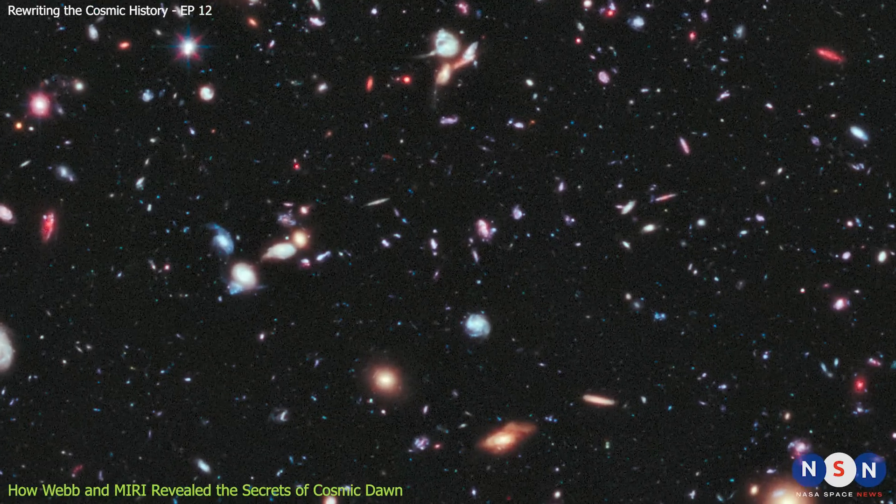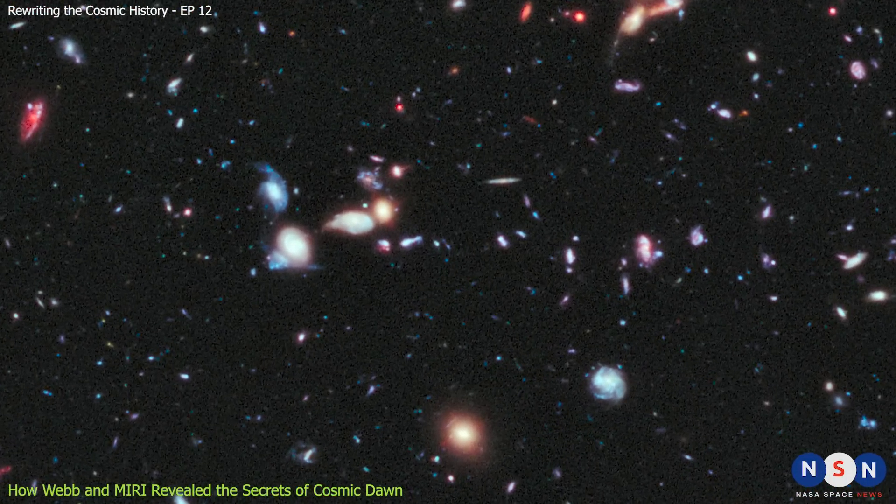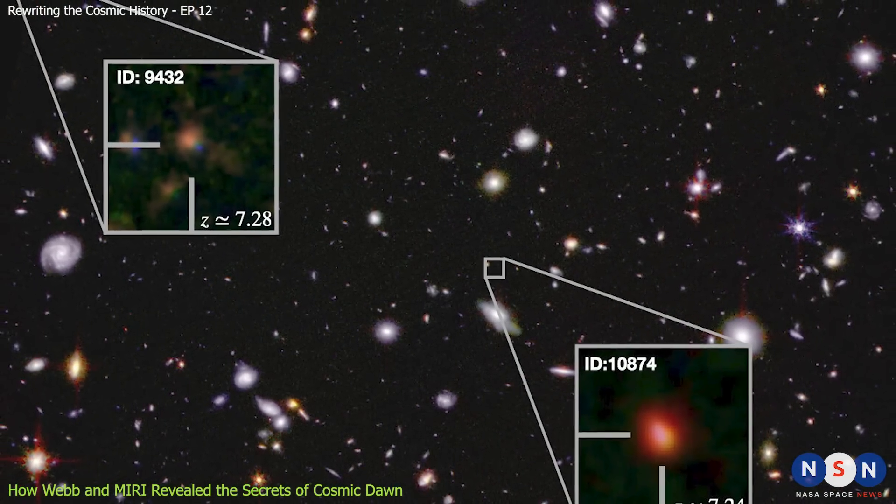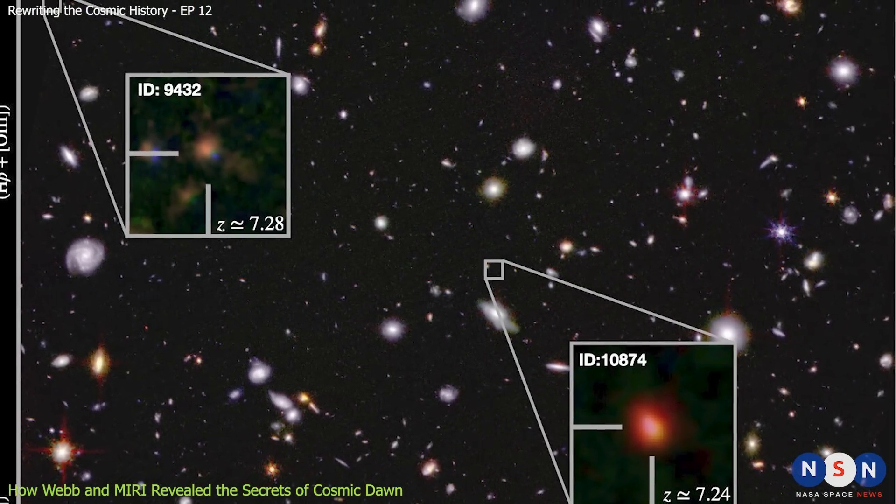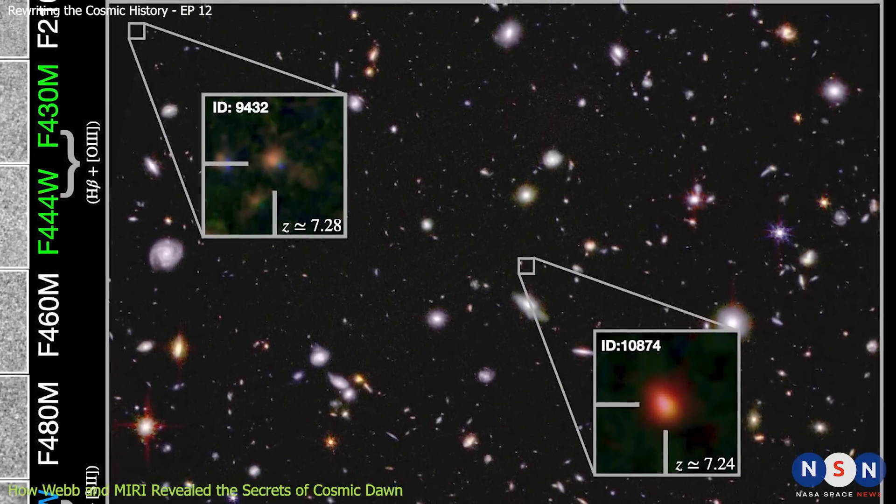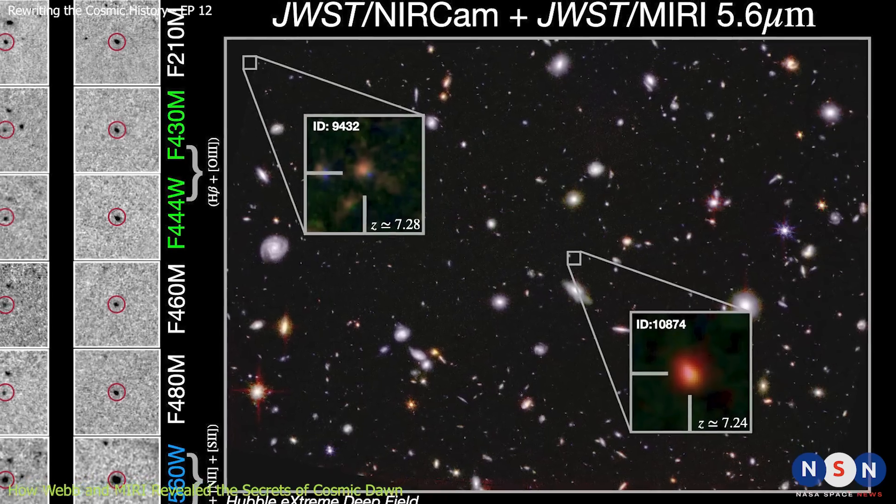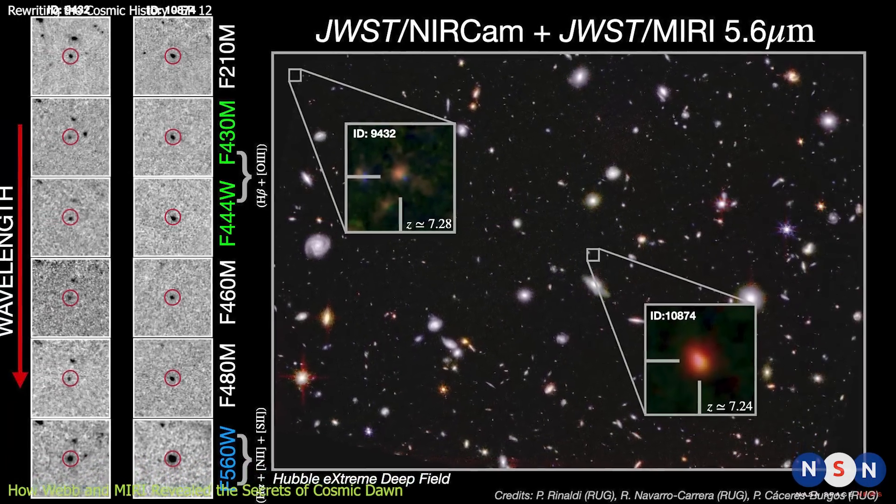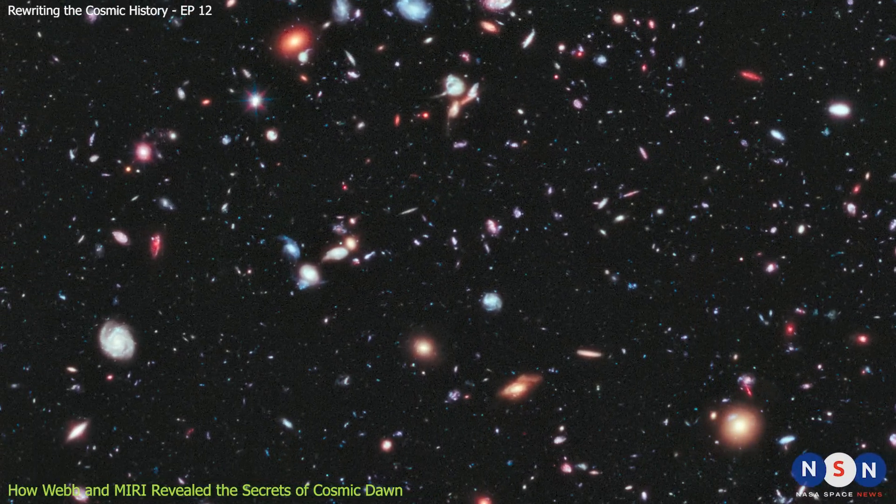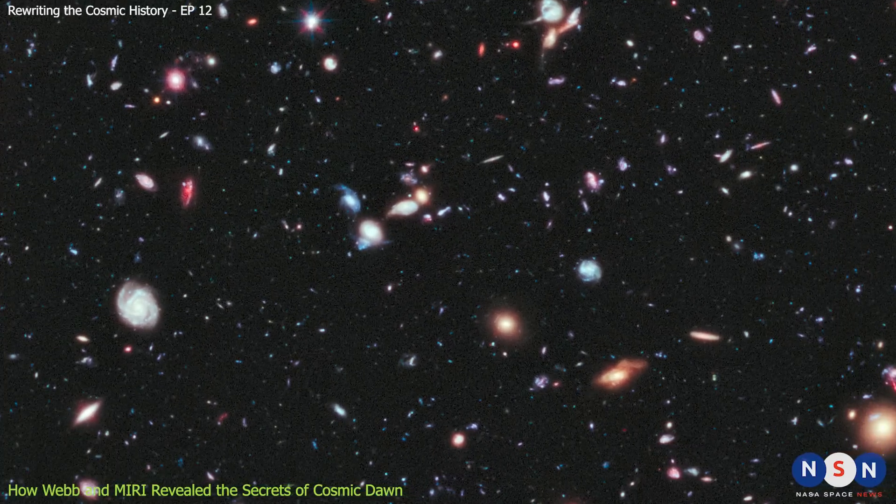MIRI used this mode to observe an even smaller region within the James Webb Extreme Deep Field, and it found something remarkable: star formation in 12 galaxies that are located at redshifts between 6 and 9. This means that these galaxies are between 12.8 and 13.4 billion light-years away from us, and they formed when the universe was only 500 to 800 million years old. These are some of the most distant galaxies ever detected by any telescope, and they are also some of the first galaxies to form during cosmic dawn.